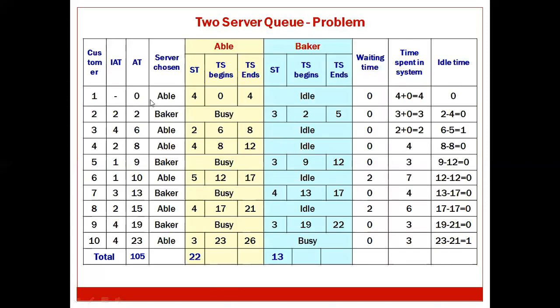For the first customer, arrival time is zero. Since Able is more experienced, he takes the first call. His service time is 4 minutes, time service begins is 0, and time service ends is 4. Baker is idle at this point. Waiting time is zero, time spent in the system is service time plus waiting time = 4 + 0 = 4. Idle time for this customer is zero.